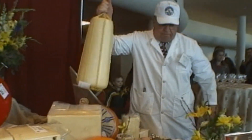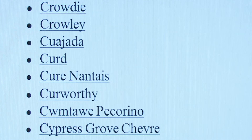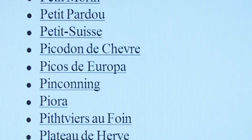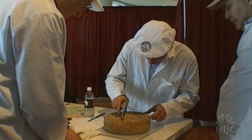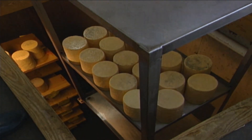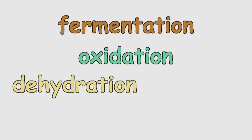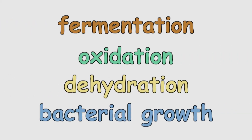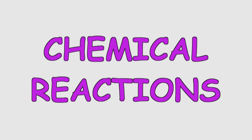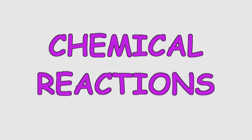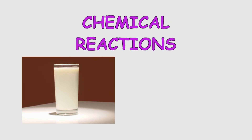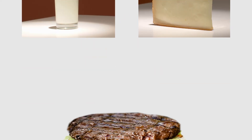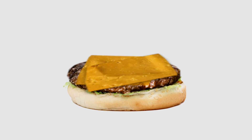Today, cheeses come in a global array — at least 670 different kinds are listed in a leading cheese database. Chemistry is the reason all those different textures and flavors develop during cheese processing and aging: fermentation, oxidation, dehydration, bacterial and mold growth — they're all chemical reactions. So there you are: a basic explanation of the chemical processes that turn liquid milk into solid cheese, and turn a hamburger into a cheeseburger.